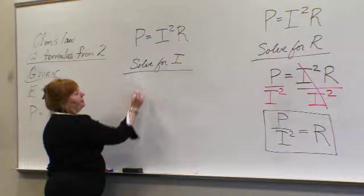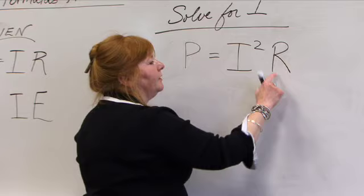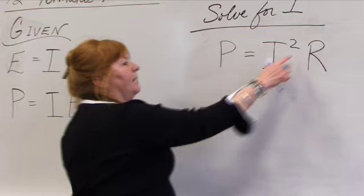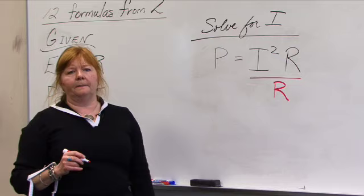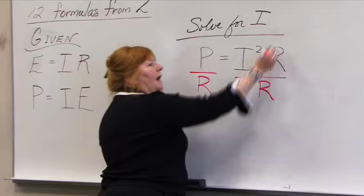I have P is equal to I squared R. The first thing that we want to get out of the way here, if you will, is R. The opposite operation is to divide by what I want to move over. I want to get this R out of the way. What I do to one side of the equation, I must do to the other to keep it equal. And when I do this, this cancels and shifts over.